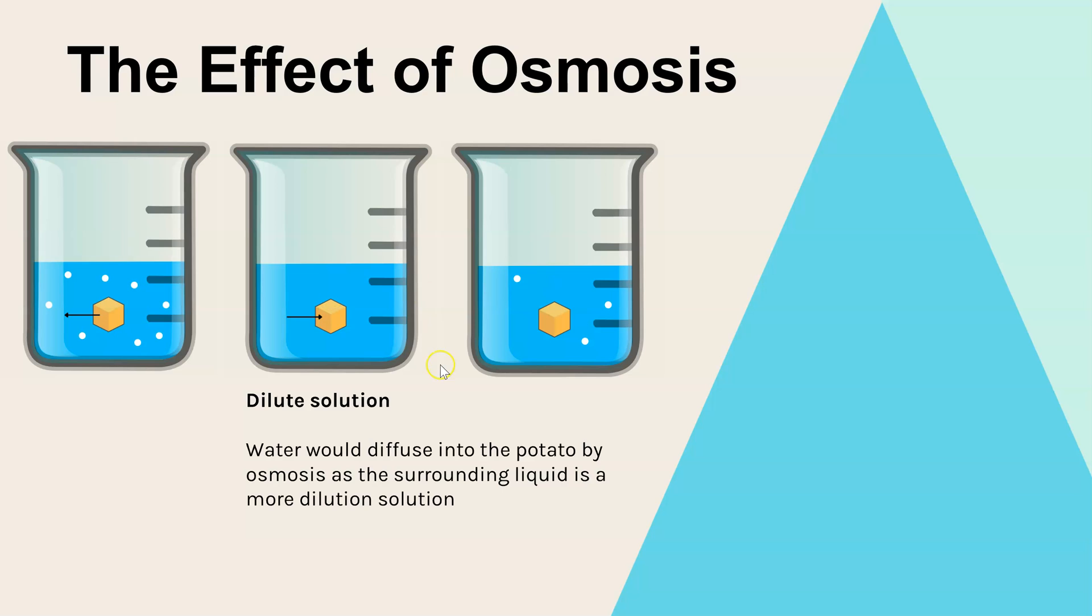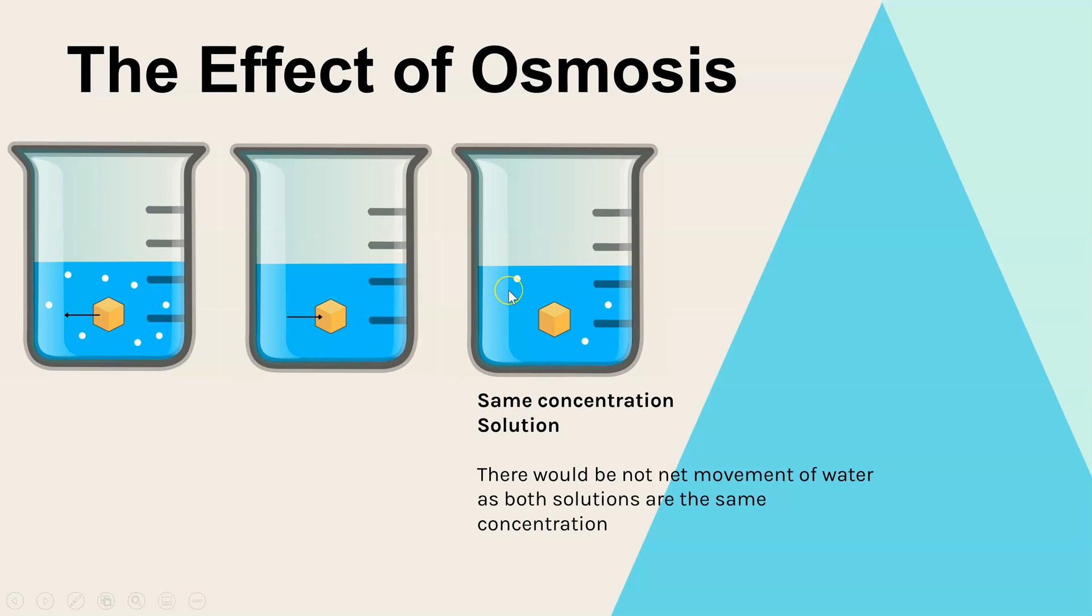In our third scenario, we have a solution which is exactly the same concentration as the inside of the cell for whichever solute we've made it up for, whether that's sugar or salts. And if that's the case, there won't be any overall movement or net movement of water because it's already at equilibrium. Or in other words, there's the same concentration inside and out.